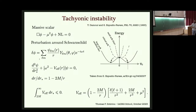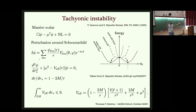The simplest version of this model is basically ruled out by binary pulsar data. You could add a mass to the scalar, making it massive, which would confine the scalar. If you have two pulsars dressed with a scalar configuration but the falloff is exponential rather than 1/r, the scalar fields don't really interact, so there is no scalar emission and you could evade the constraints — but you've created a model with not much phenomenology.